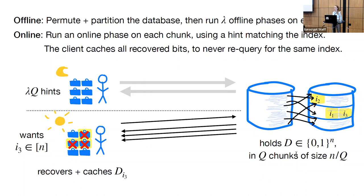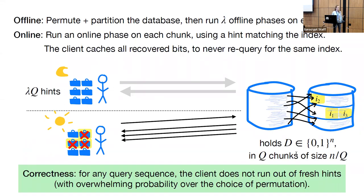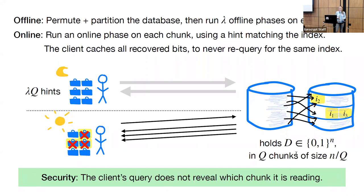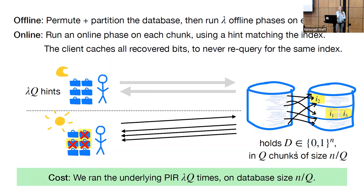This completes the construction of the compiler. Correctness holds because for any query sequence, the client is not going to need to read any chunk more than λ times with overwhelming probability, so for any query sequence, our client is not going to run out of fresh hints. Security holds intuitively because the underlying PIR scheme is secure, so the server learns nothing about which index the client is reading within each chunk, and our query leaks nothing about which chunk the client is reading.